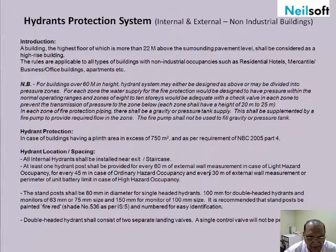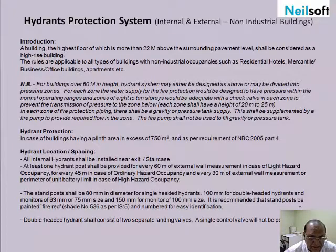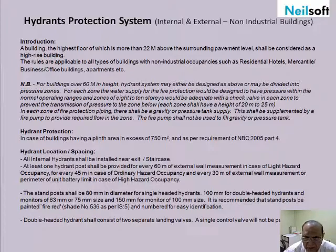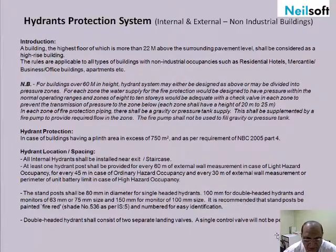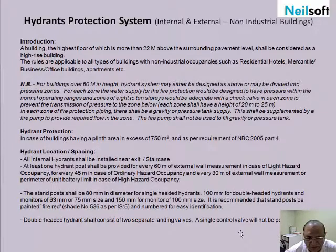Regarding the standpipe: external hydrants must be mounted on a pipe with a minimum diameter of 80 millimeters for single-headed hydrants, and 100 millimeters for double-headed hydrants. For monitors of 63mm or 75mm, it should be 75 millimeters diameter. Double hydrants shall consist of two separate landing valves — a single control valve will not be permitted. This means each hydrant should be separated by a separate valve for the purpose of maintenance and use.